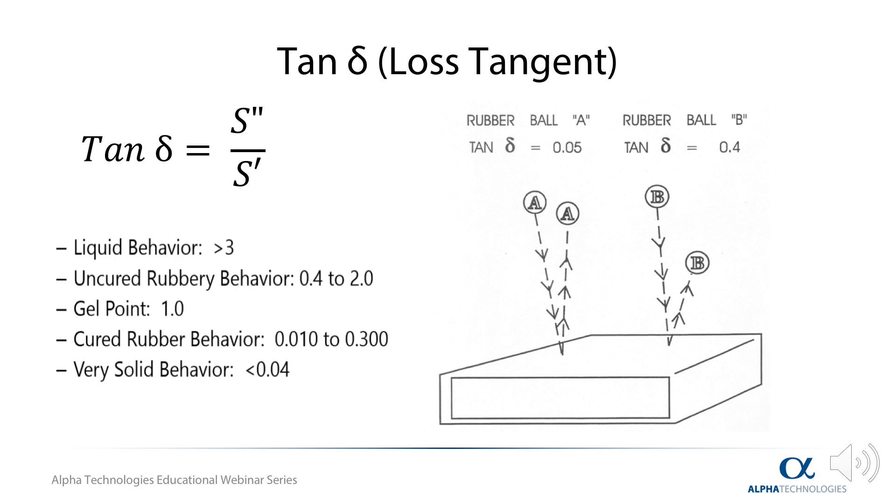The example above shows the effect of tan delta on a cured material. Cured material A has a relatively low tan delta value of 0.05, and therefore behaves more elastically, i.e. like a solid. This is intuitive based on the above equation, as the S prime, or the elastic torque response, will be the governing variable.